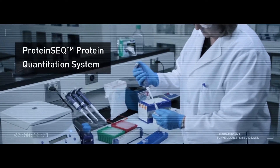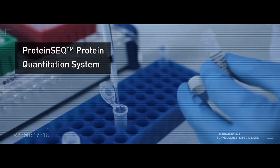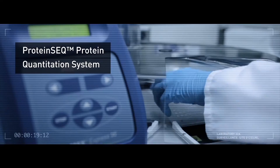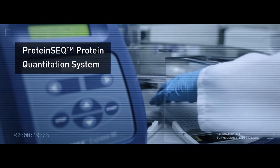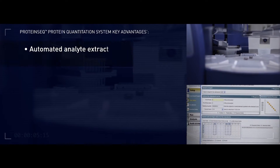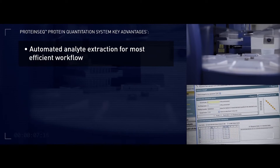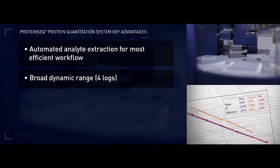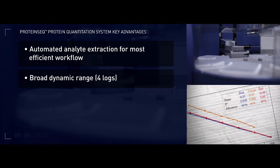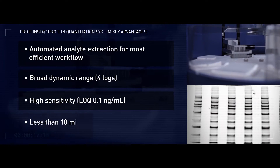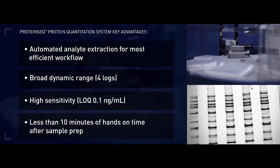The ProteinSeq system is a breakthrough immuno-PCR technology for sensitive and reproducible quantitation of protein A or host cell impurities. It offers automated analyte extraction for the most efficient workflow, a broad dynamic range of four logs, high sensitivity with an LOQ of 0.1, and less than 10 minutes of hands-on time after sample prep.